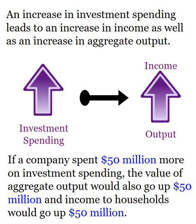This is where the multiplier starts getting a little bit complicated. We're going to start with an increase in investment spending. Remember, investment spending is spending done by firms or businesses — not buying stocks and bonds, but spending by firms on their business. Let's say a firm decides to spend $50 million overall. That $50 million increase is actually going to multiply because theoretically, if you're spending that much money on your business, you would expect to get at least that much out of the investment. So the value of the output will go up the same amount — output goes up $50 million as well.